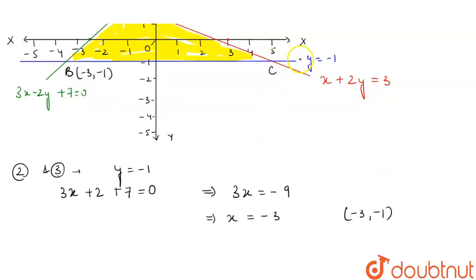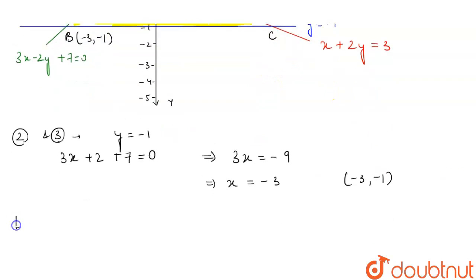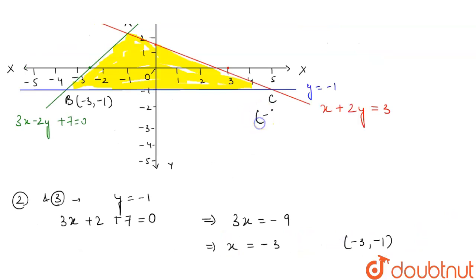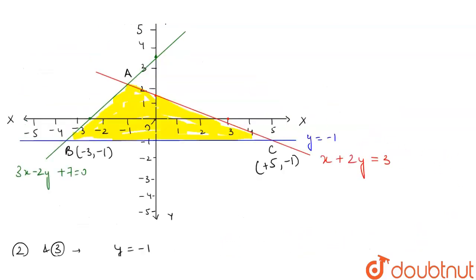Point C is the intersection of line 1 and line 3. Substituting y = -1 into x + 2y - 3 = 0 gives x - 2 = 3, therefore x = 5. So C = (5, -1).